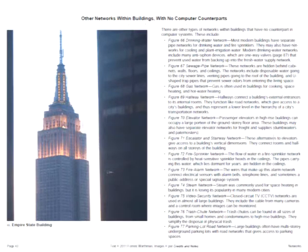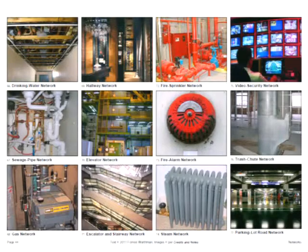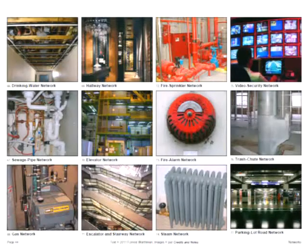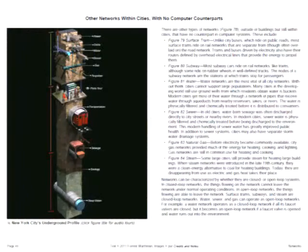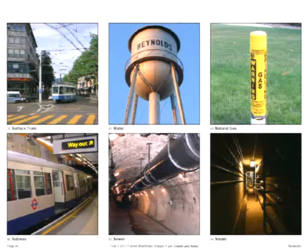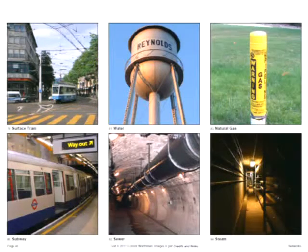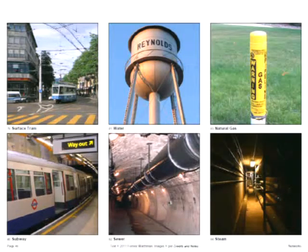There are many networks within buildings that have no comparable computer correspondence: water for drinking, sewage water, gas networks, hallway networks, elevator networks, escalators, fire sprinklers, and so on. Other networks within cities also have no computer counterparts: service trams, subways, and underground pipelines for fresh water, sewer water, natural gas, and in some cases steam.